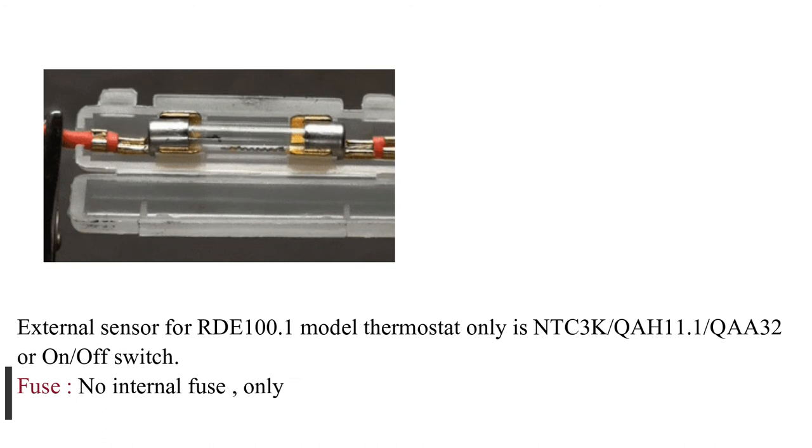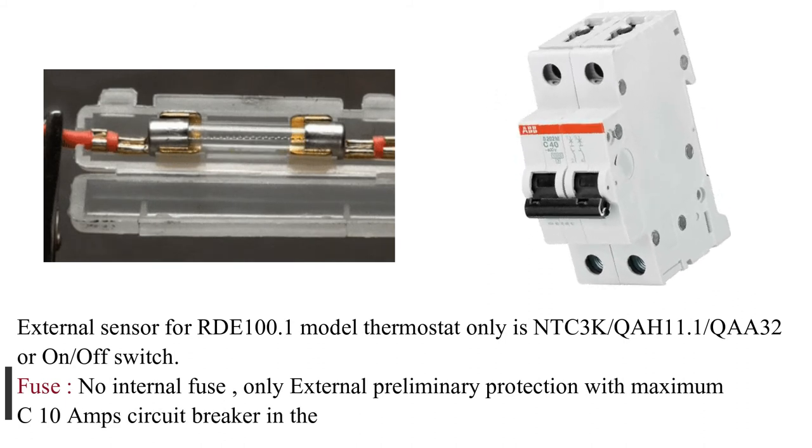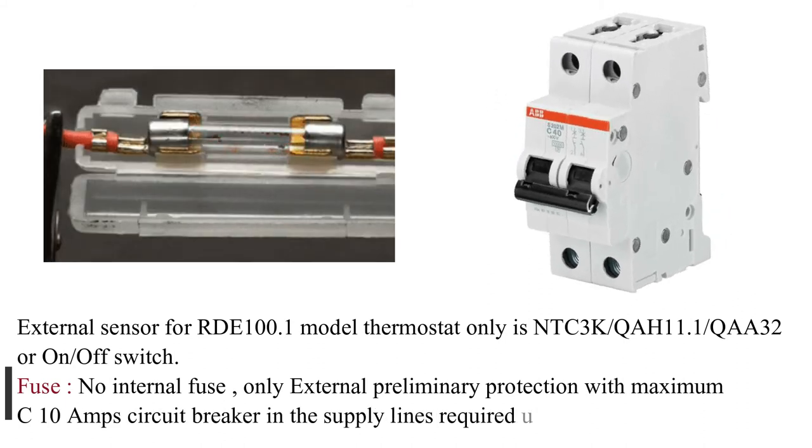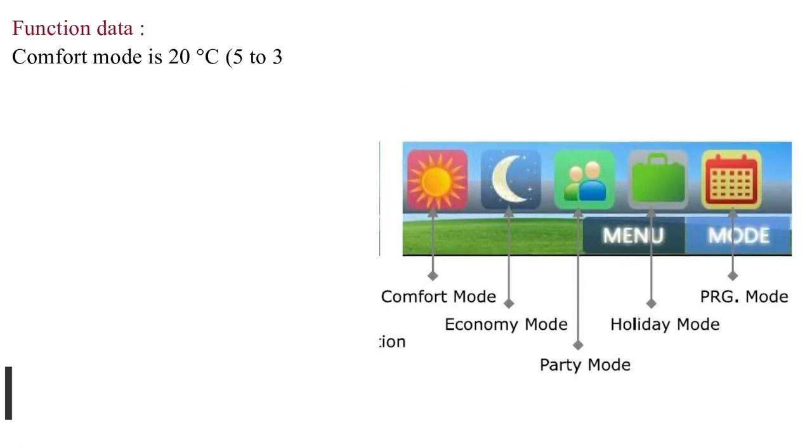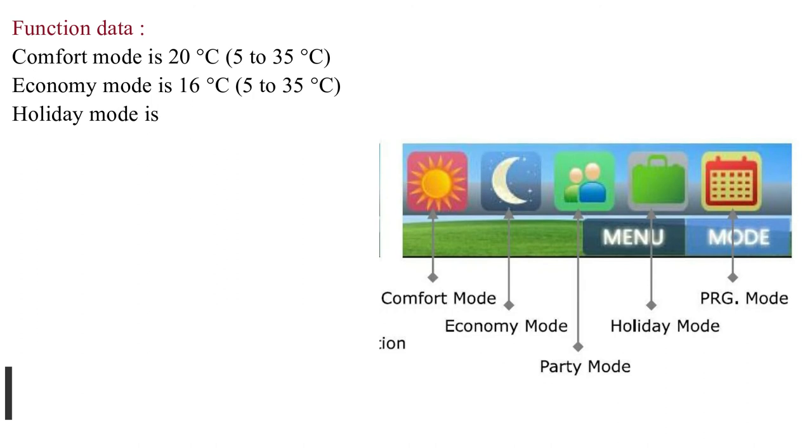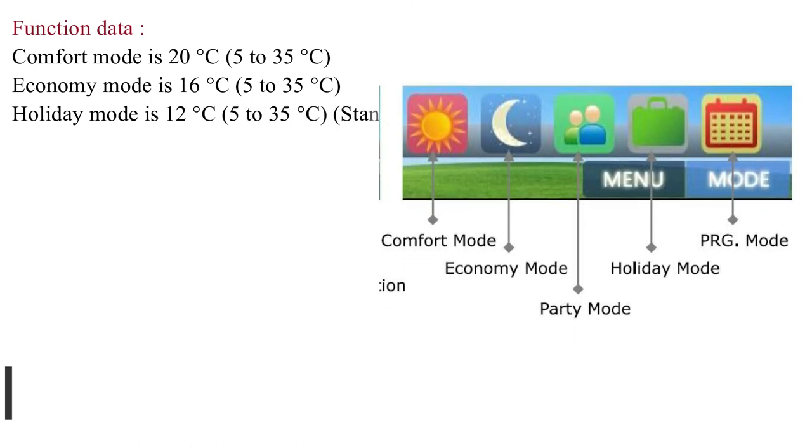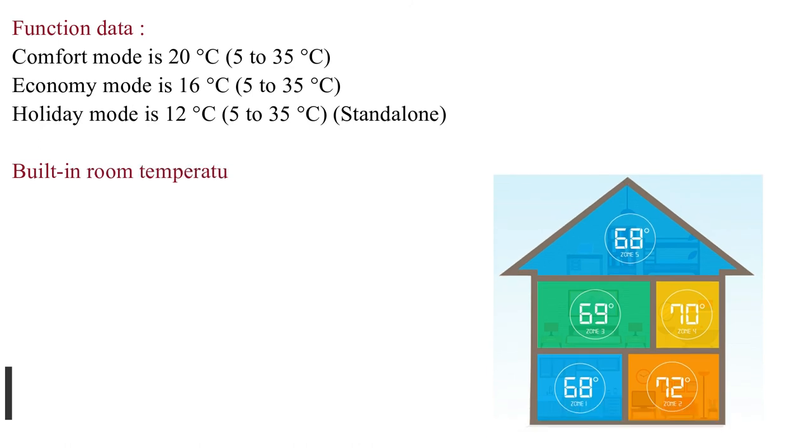Fuse: No internal fuse, only external preliminary protection with maximum C 10 amps circuit breaker in the supply lines required under all circumstances. Function data: Comfort mode is 20 degrees Celsius (5 to 35 degrees Celsius range), Economy mode is 16 degrees Celsius (5 to 35 degrees Celsius), Holiday mode is 12 degrees Celsius (5 to 35 degrees Celsius), stand alone.